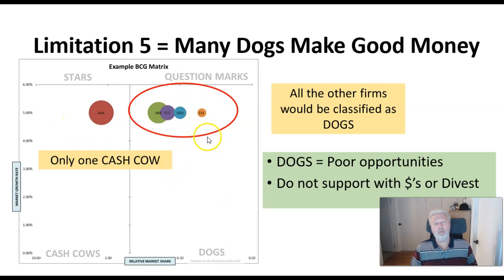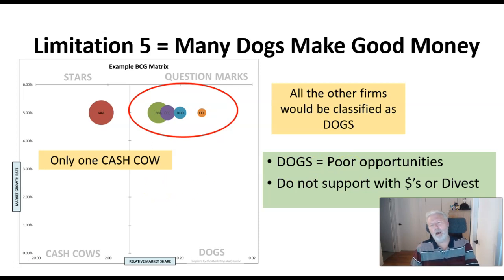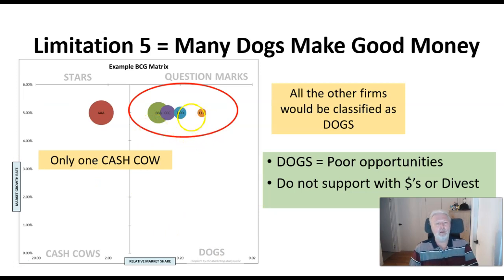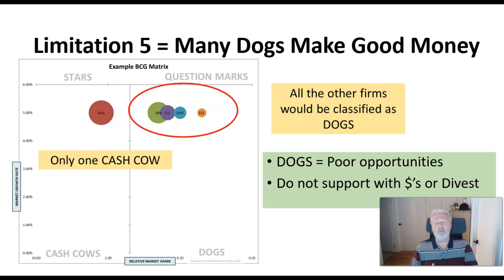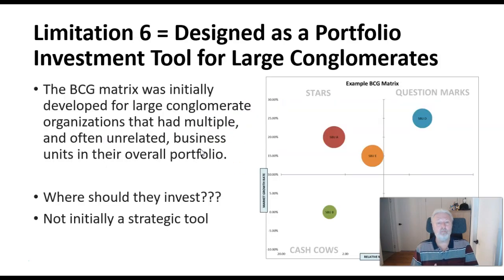Limitation five: if you're classified as a dog, the matrix says it's a poor opportunity — either leave it alone, don't invest, or divest it. But as shown with Apple, many dogs are profitable. Yes, they may not be as profitable as some cash cows, but they still make good money. Using the term 'dog' implies you should get rid of it, and strategically that's often not a good choice.